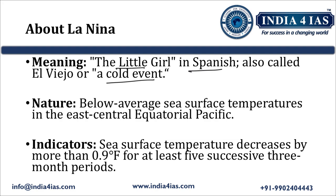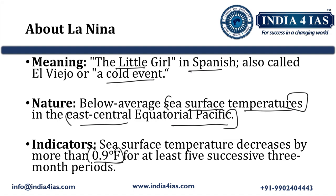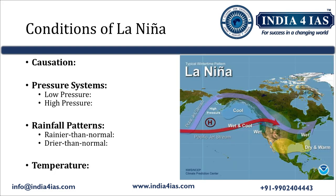Coming to the nature of La Nina: the sea surface temperature is below average in the eastern and central equatorial Pacific Ocean. This sea surface temperature decreases by more than 0.9 degrees Fahrenheit for at least five successive three-month periods. The condition required for La Nina formation is that the sea surface temperature in the eastern and central Pacific Ocean should be below average in the tropical region.